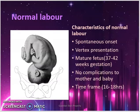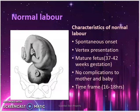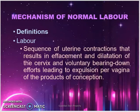Since we're discussing the mechanism of normal labor, let us look at the characteristics of normal labor. Normal labor should be spontaneous in onset, meaning it should not be induced — it should begin on its own. The fetus should be in vertex presentation, meaning the head should present. The fetus should be mature, at about 37 to 42 weeks gestation, and there should be no complications to the mother or baby. The timeframe from onset of labor to delivery should be about 16 to 18 hours. These are the five characteristics of normal labor.